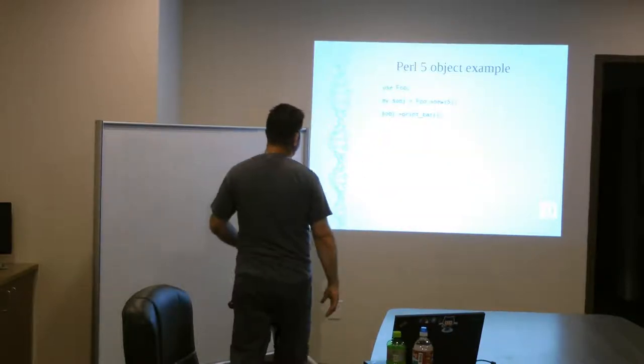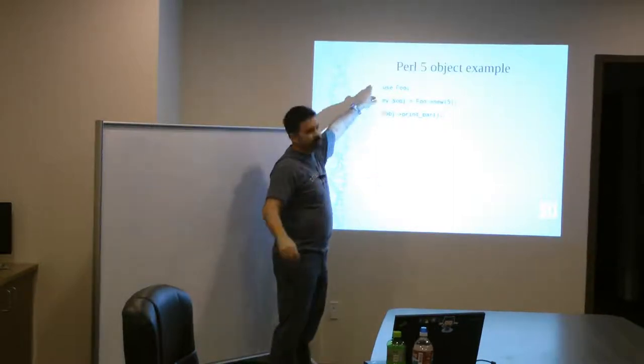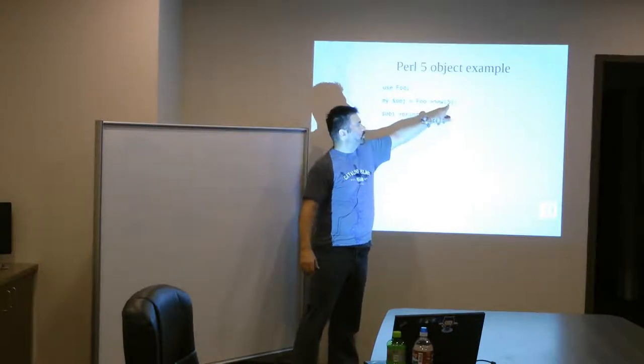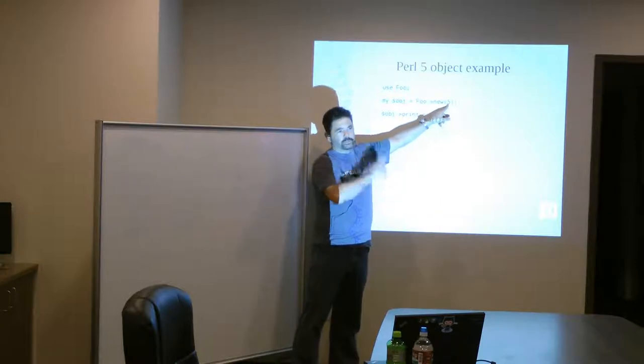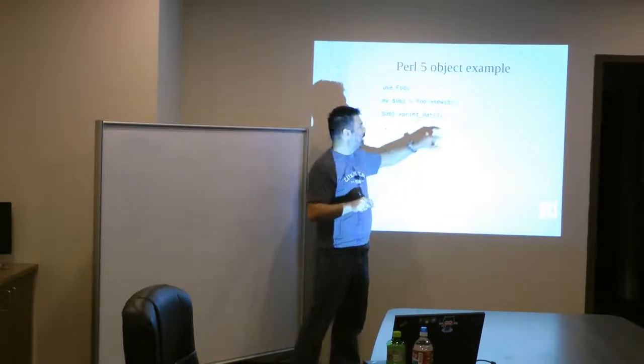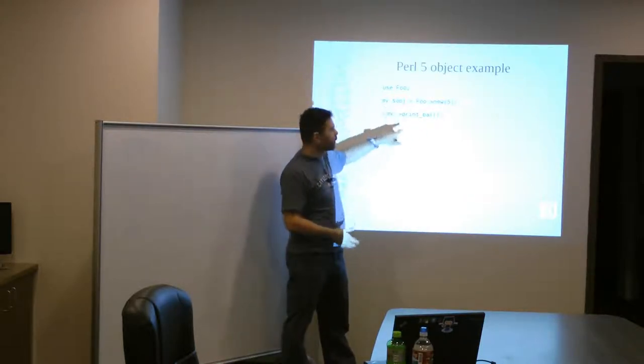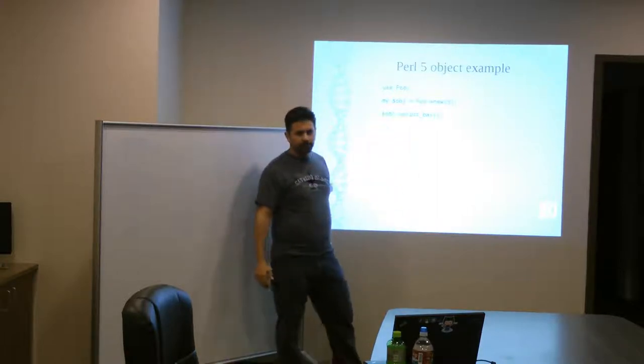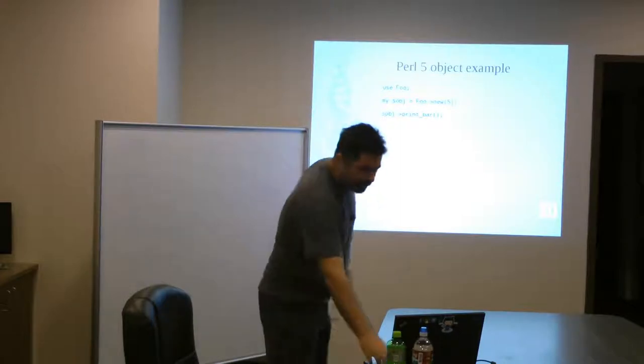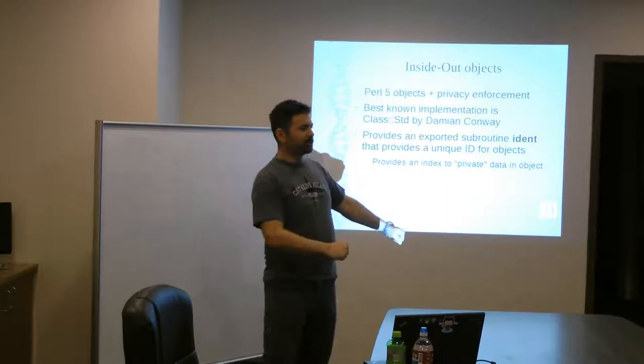And then here's an example of how we would actually use that. So we have that foo package declared somewhere else, and then we use foo. We create an object, say foo new, and we pass in the number 5, which we know, because we saw the code before, gets pulled into bar and gets saved in bar. And then down here we have a method that we didn't show the code for, but we have a method called print bar that just prints out the value of bar or something like that. Okay, any questions before we move on to our next object-oriented paradigm?